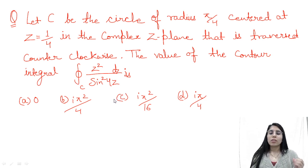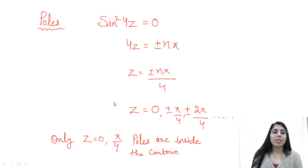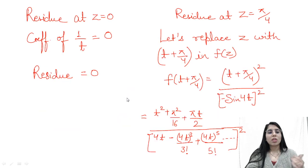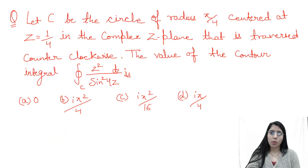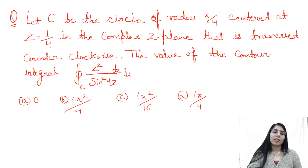Now, the common general steps we take to find the contour integration answer are: first, we find the poles; after that, we find the residue at the poles which are lying within the contour; and then we use the Cauchy residue theorem to get our final answer. Here also we will take the same steps. Let me show you how we identify which poles lie within the contour and how to find the residue at those poles.